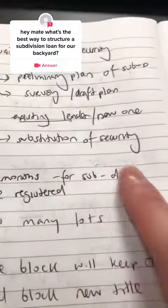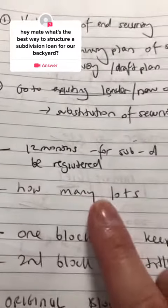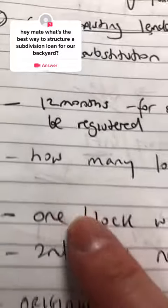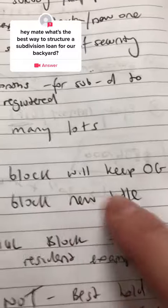For example, for a subdivision, you can take up to 12 months to be registered and you need to decide in your backyard how many lots are you subdividing. The way it looks is that one block will hold the original title and then the second block will hold the new title.